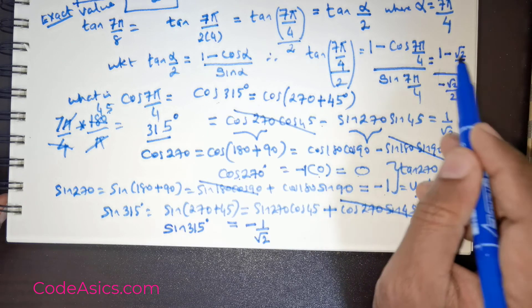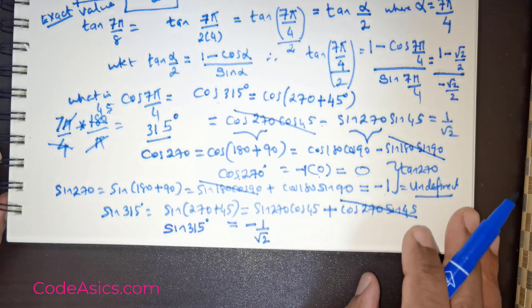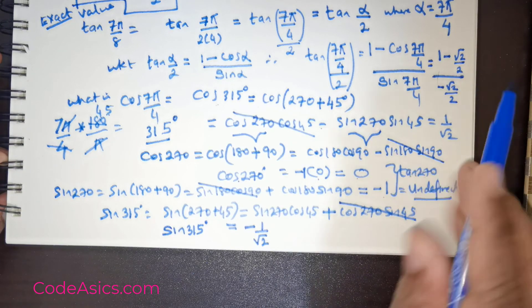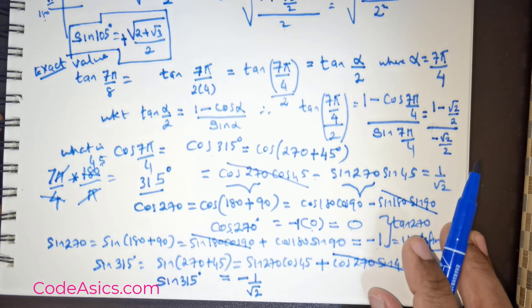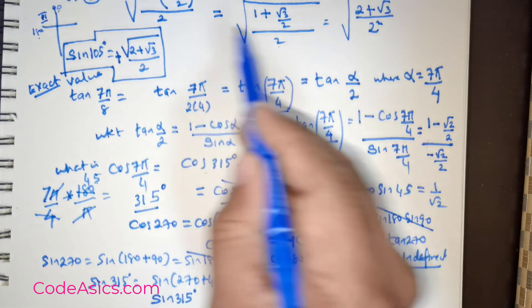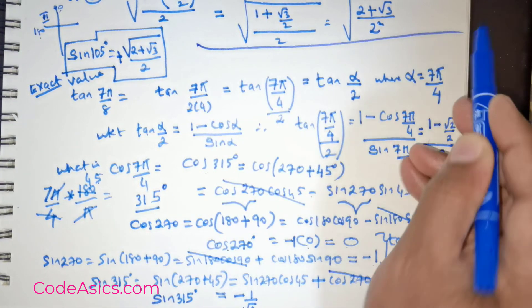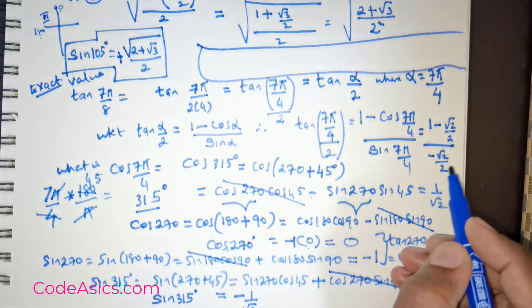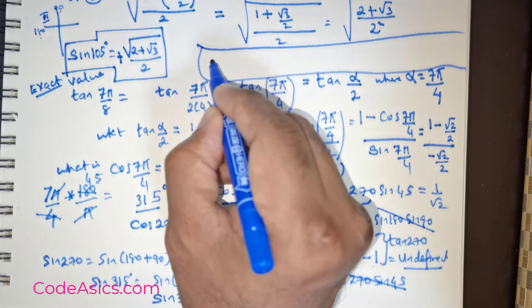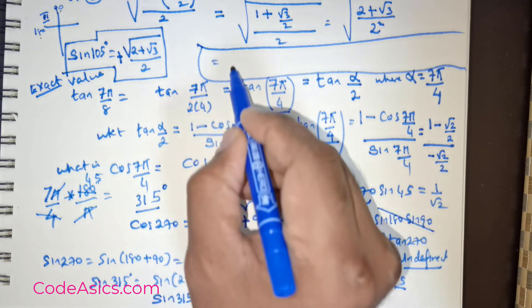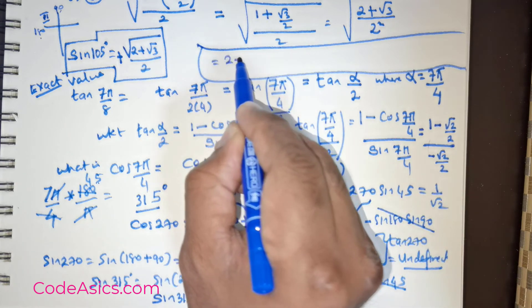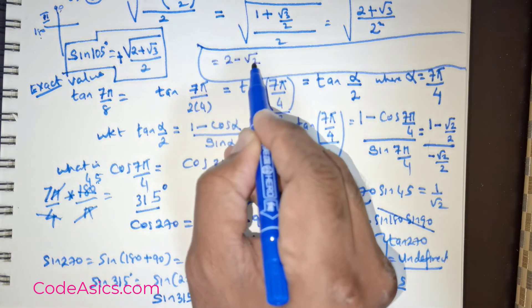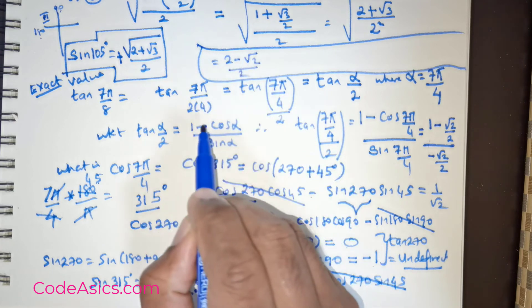So now the question comes, I need to simplify this. So how am I going to simplify this? Taking 2 as the LCM. I just don't want it to have a break. So taking the LCM as 2, this is going to be 2 minus root of 2 divided by 2. This is for the numerator.